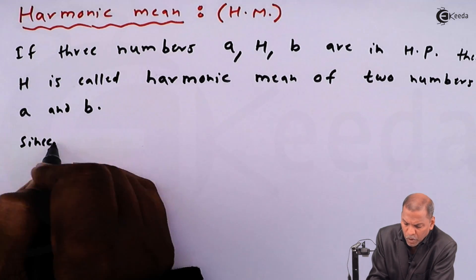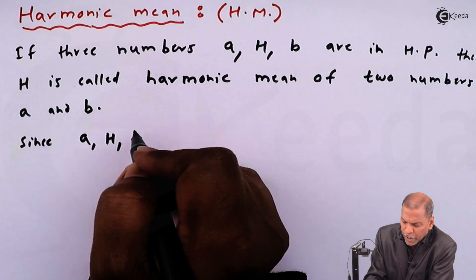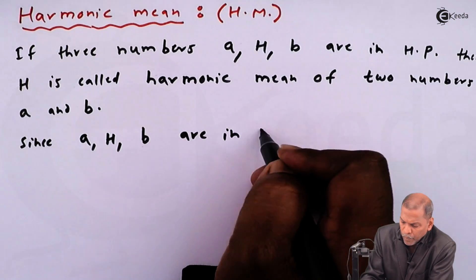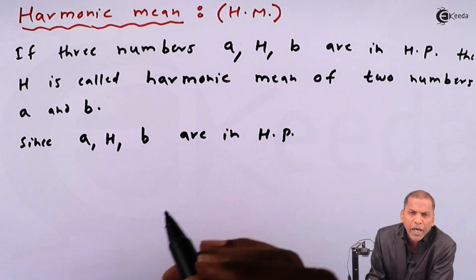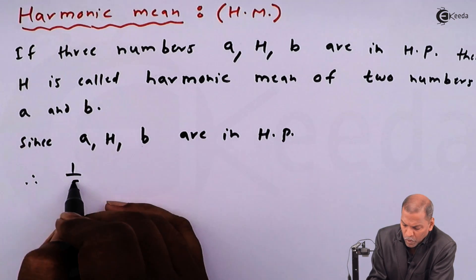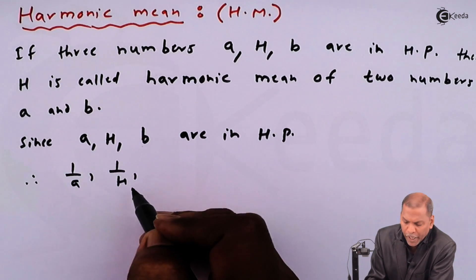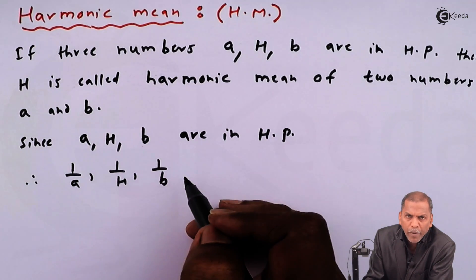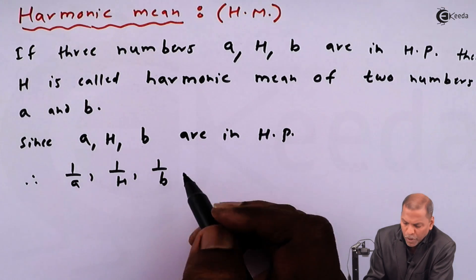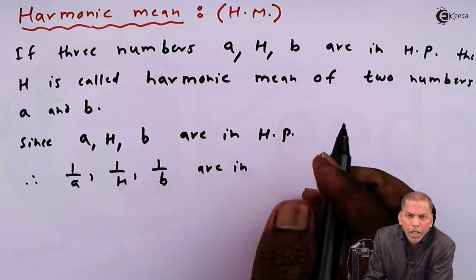Since the numbers a, H, and b are in HP, therefore the numbers 1/a, 1/H, 1/b — that is, the reciprocals of the given numbers — must be in AP.